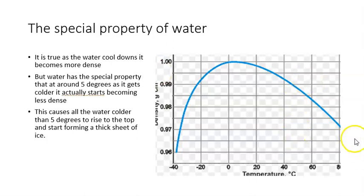Although it is true that as water cools down it becomes more dense, and we can see that here. At 80 degrees it's about 0.97, at 60 it's about 0.98, at 40 it's about 0.99, at 20 it's about 0.9975.